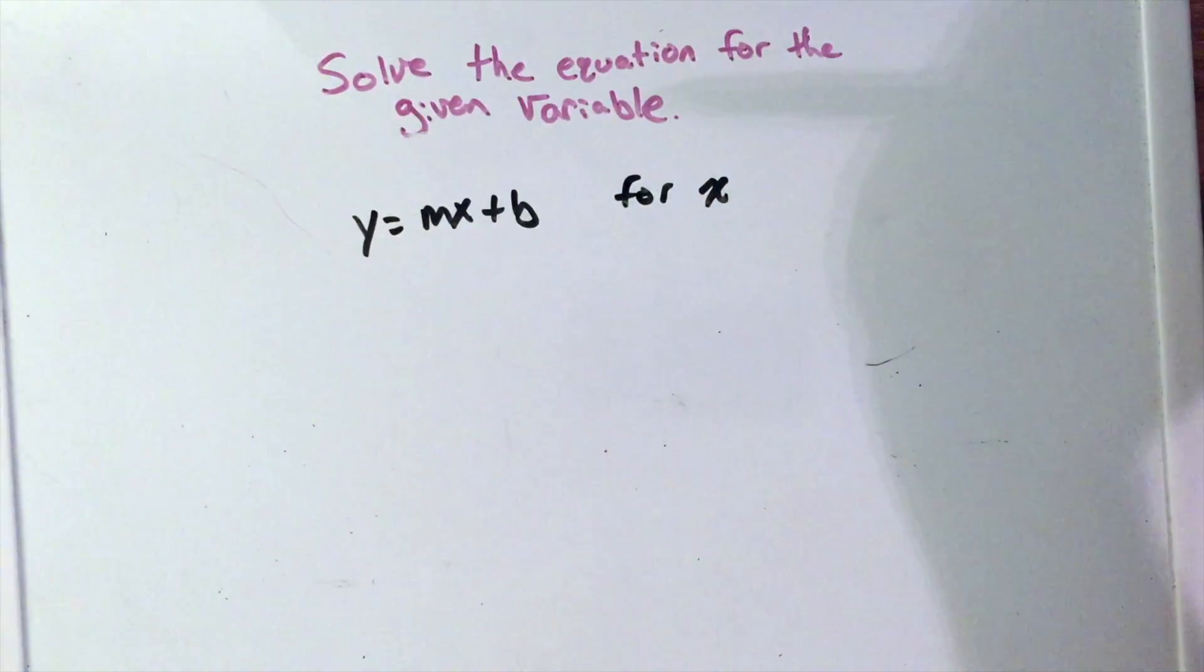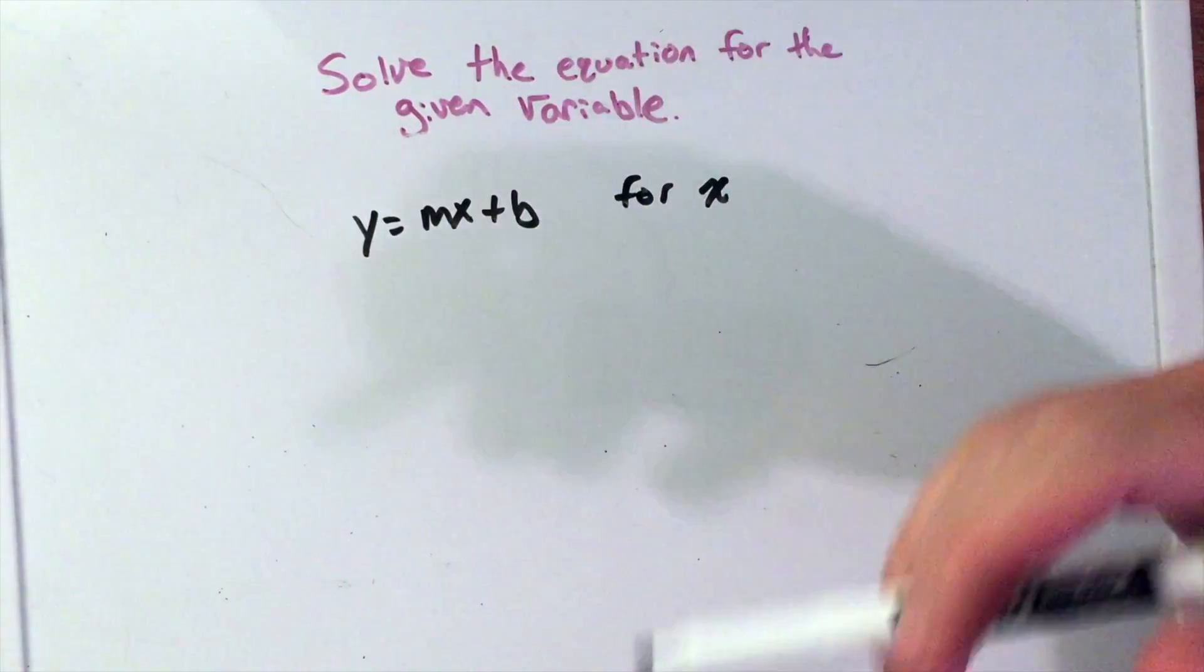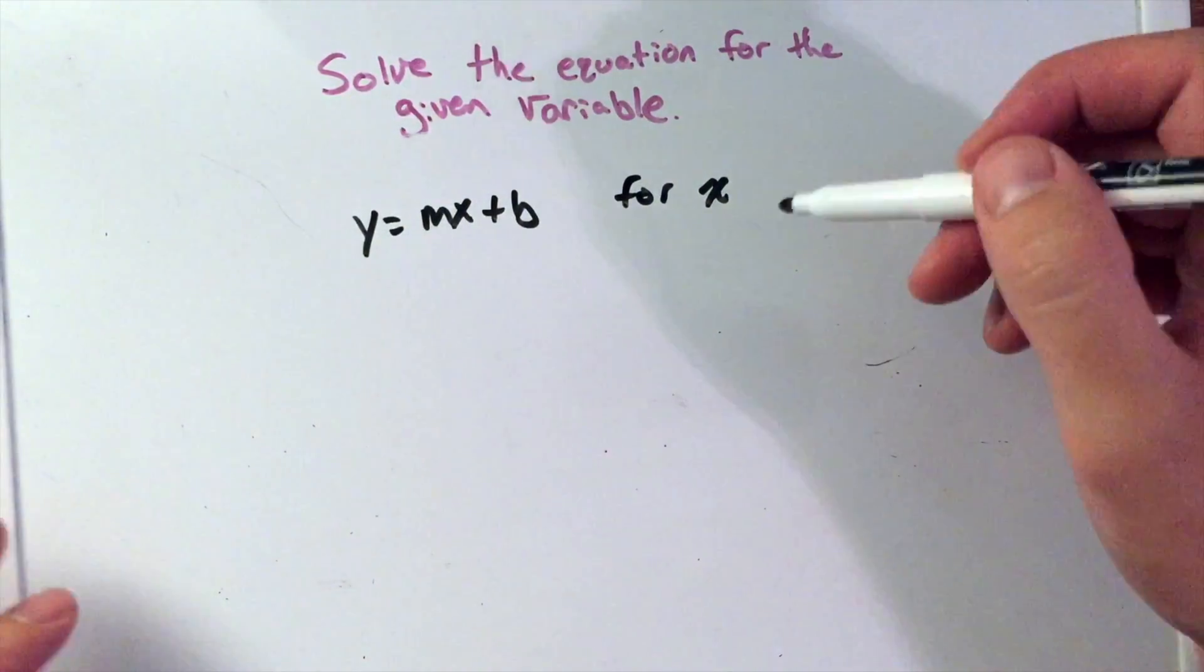So we're in slope-intercept form, we recognize that, but we can just treat it just like any other equation. We want to solve for x by itself.